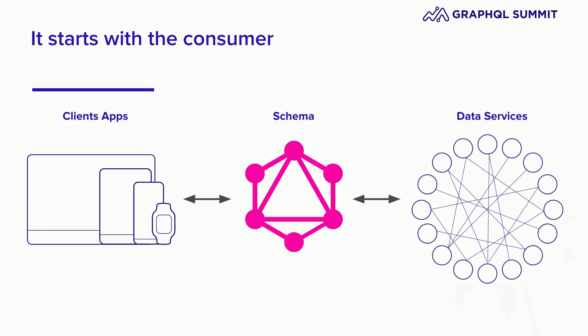I really wanted to talk about the entry points of the graph, specifically queries and mutations, and how we approach designing these in a way that's going to allow us to get the utility out of the graph that we're looking for. Client developers should be proposing what is being exposed — that's the initial starting point. So if you could execute this query and get the data you need, what would that look like, and would this solve your use case?